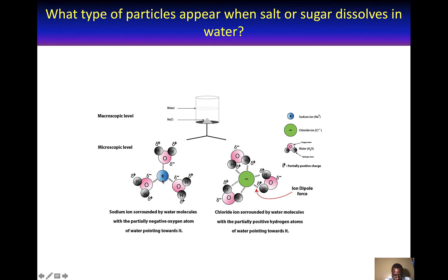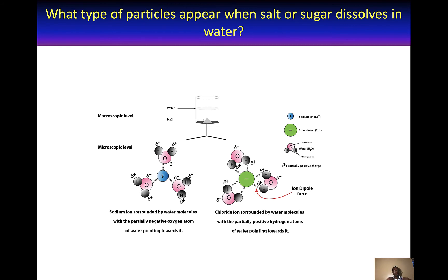If we replace the blue circles with sugar molecules, then the sugar molecules will also be surrounded by water molecules. But the fact is that the sugar molecules will not have pluses or minuses because they are neutral molecules. So because they are neutral molecules, when you connect the solution to electricity, it wouldn't conduct electricity because charge carriers aren't present in solution.